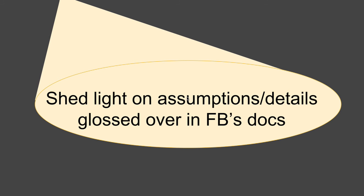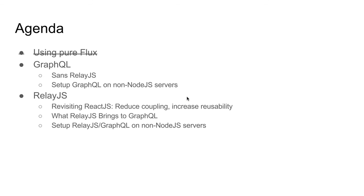MissingPages intends to shed light on assumptions and details glossed over in Facebook docs so that it's easier to understand when you read those docs. We will explain how you can use GraphQL without RelayJS, how to set up a GraphQL server on non-NodeJS servers, and then we will cover RelayJS, explaining how it helps reduce coupling and increase reusability of React components. We will also talk about what RelayJS brings to GraphQL, and finally how to set up RelayJS GraphQL on non-NodeJS servers.